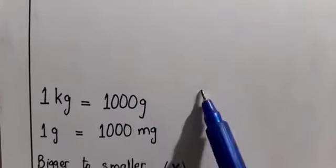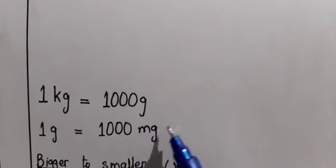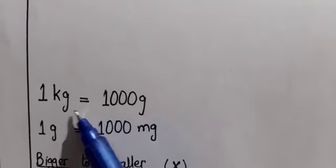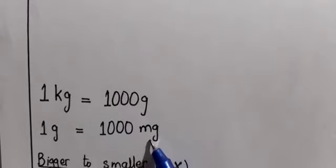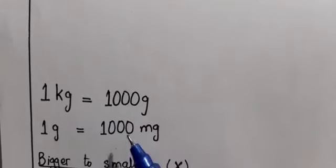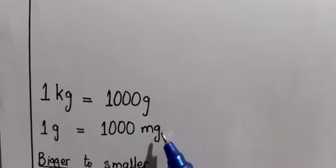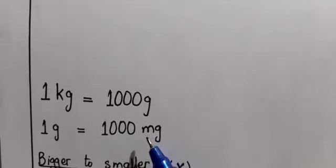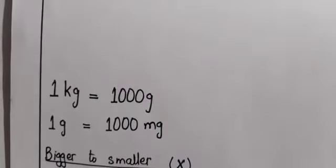One kilogram has one thousand grams, but I have also told you there is another unit: milligram, which is the smallest. Kilogram is bigger, gram is smaller, milligram is the smallest. One gram has one thousand milligrams. Whenever you see any tablets at home and check their weight, you will see the weight of the salt written in milligrams.